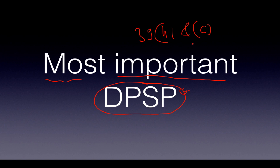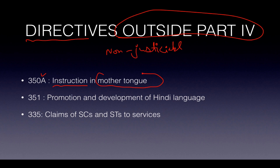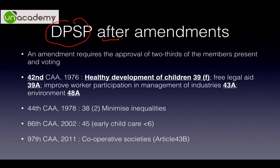There are three directives which are outside Part IV — they are also non-justiciable and non-enforceable in a court of law. Article 350A deals with instruction in mother tongue — most states with a different mother tongue will have a vernacular system in primary education and then the three-language formula. Article 351 deals with promotion and development of the Indian language, so we have the Official Language Department. Article 355 covers the claims of Scheduled Caste and Scheduled Tribe people to services. Directives added after constitutional amendment can only be done under Article 368, requiring approval of two-thirds of members present and voting.